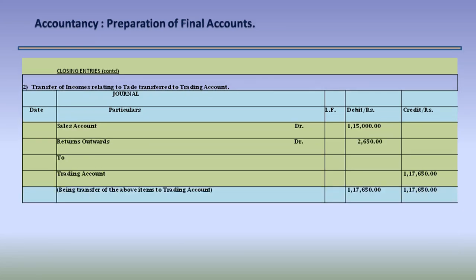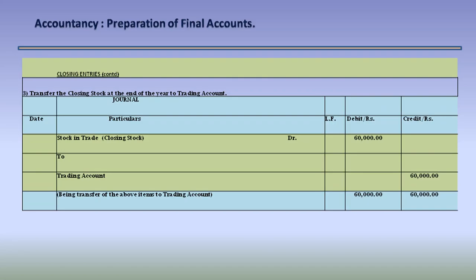Closing entry 2: transfer the incomes relating to trading account. Sales Account Dr. 1,15,000 and Returns Outwards Dr. 2,650 to Trading Account 1,17,650. Being the transfer of the above items to trading account. Closing entry 3: transfer the closing stock at the end of the year to trading account. Stock in Trade (Closing Stock) Dr. 60,000 to Trading Account 60,000. Being the transfer of the closing stock to trading account.